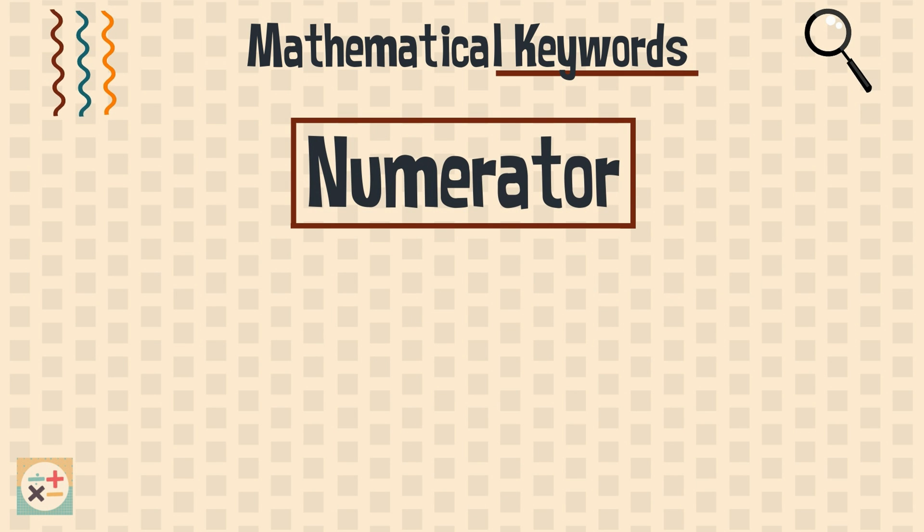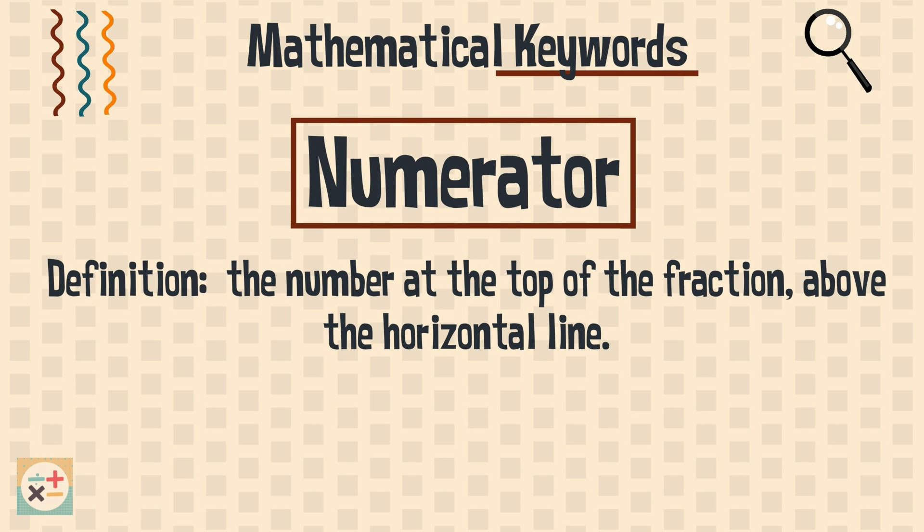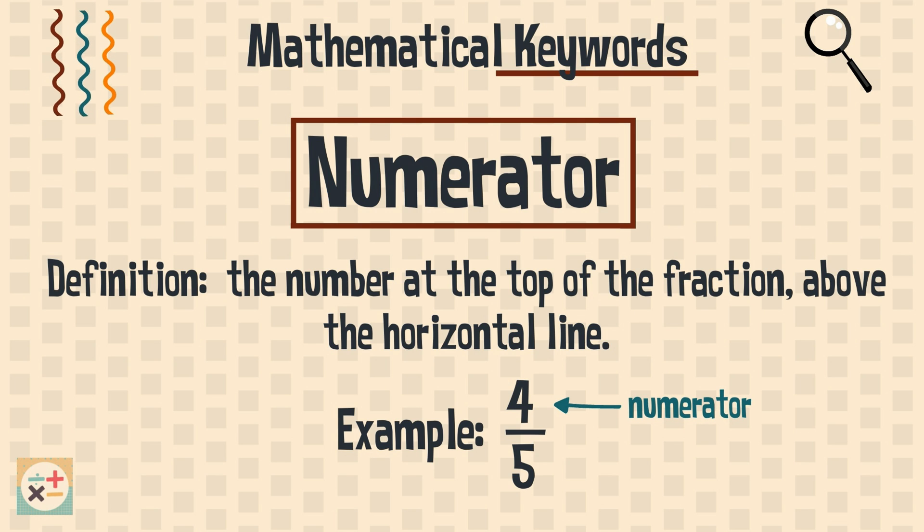Numerator. The top number in a fraction above the horizontal line. It represents the number of parts of the whole. In this fraction, 4 is the numerator. We have 4 parts out of 5.